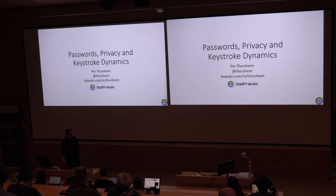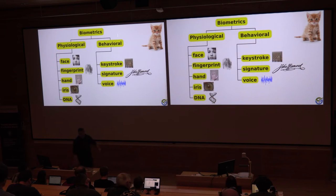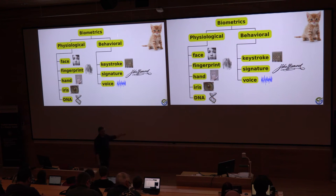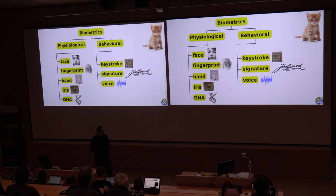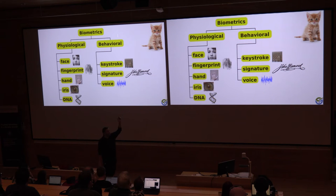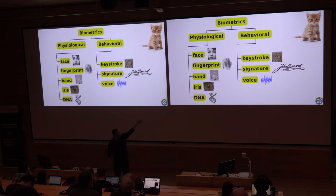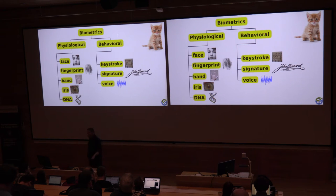The basics here are very simple. Here's a kitten for you. When it comes to biometrics, you can put it into two categories. Physiological, which is how your face looks, fingerprint, hand, iris, DNA. And you have behavioral biometrics, which is more like how you type on a keyboard, how you do your signature, how you do your voice - you can sing to your computer to log on, as an example.